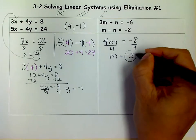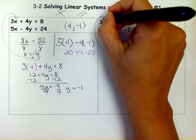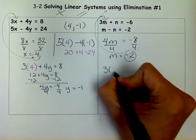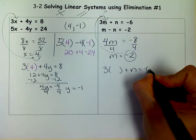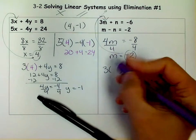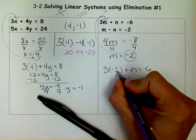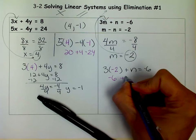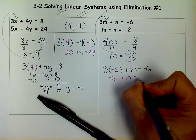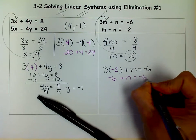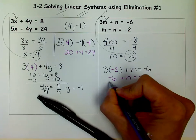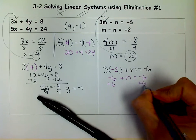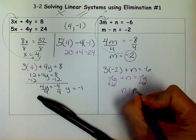Now I'm going to take my m, I'm going to take it into the first equation, and I'm going to substitute it in for that m. So I'm going to put negative 2 in for m. And when I do that, 3 times negative 2 is negative 6, plus n equals negative 6. So I'm going to get n alone by adding 6 to both sides. Those cancel out, and I get n equals 0.